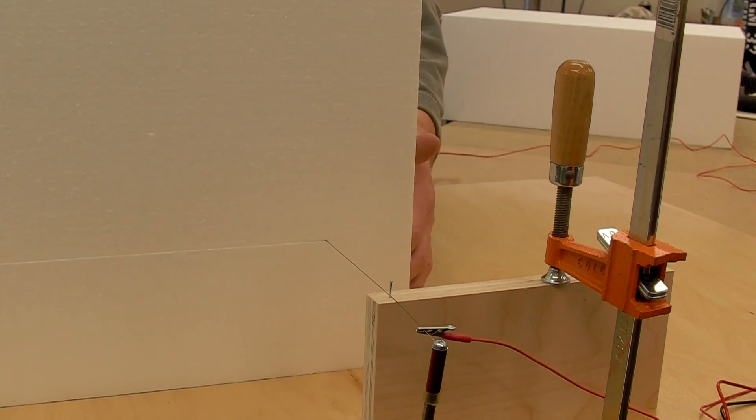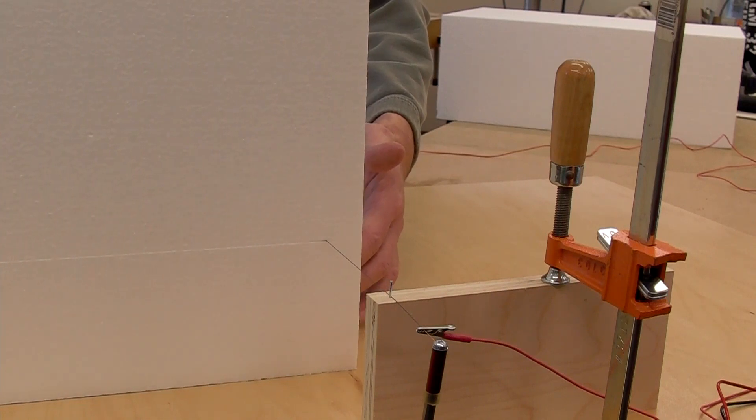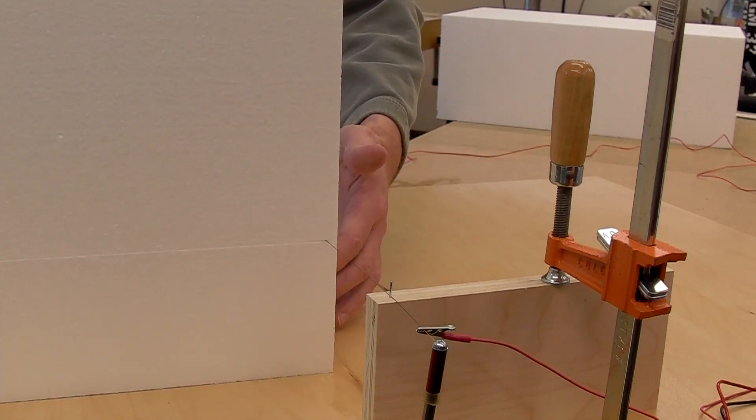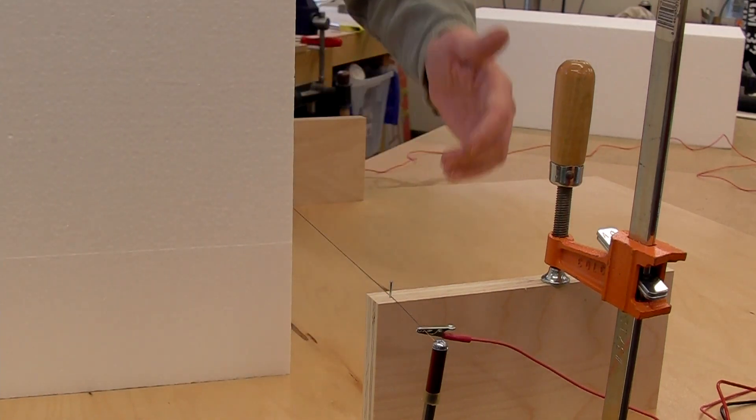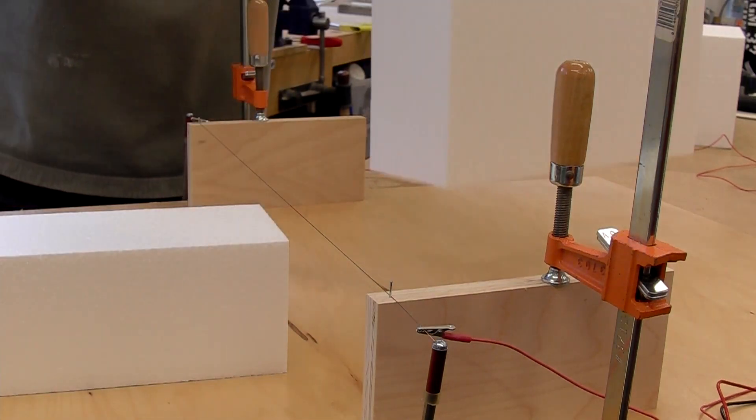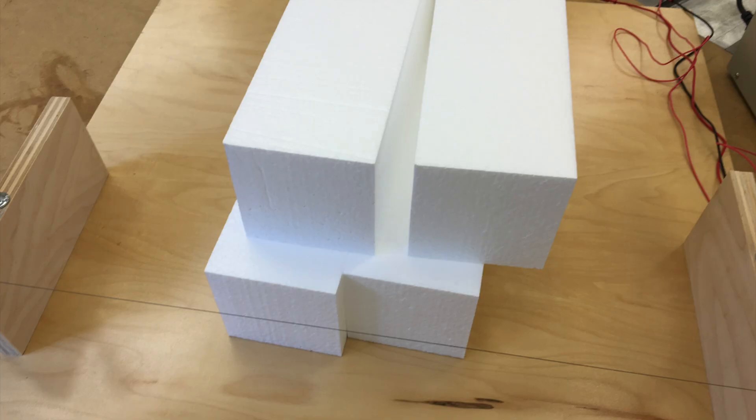One thing you don't see is that I'm wearing a respirator. This stuff gives off a nasty smell and it's probably toxic. Do this four times and we have our four blocks for the transition piece.